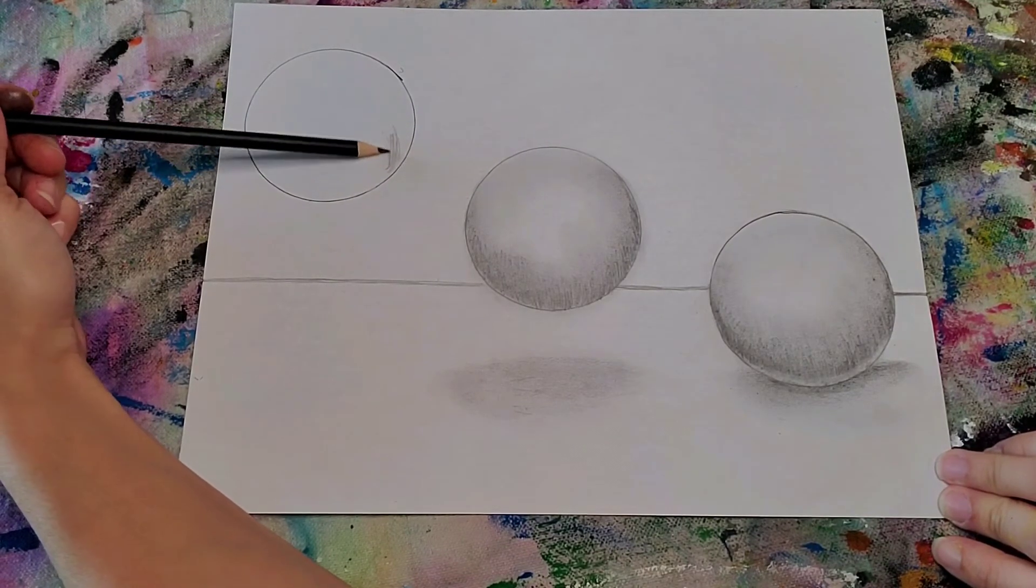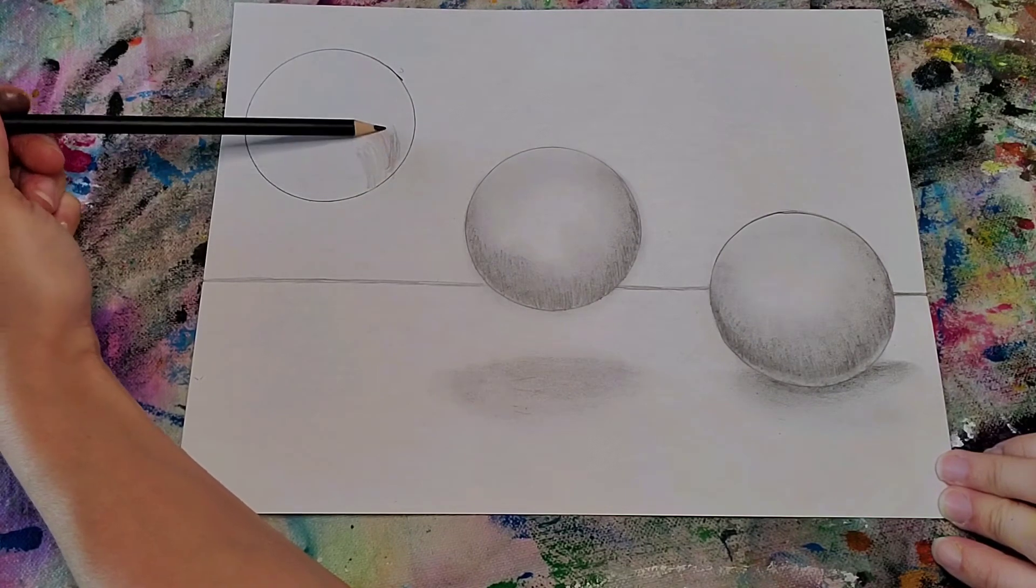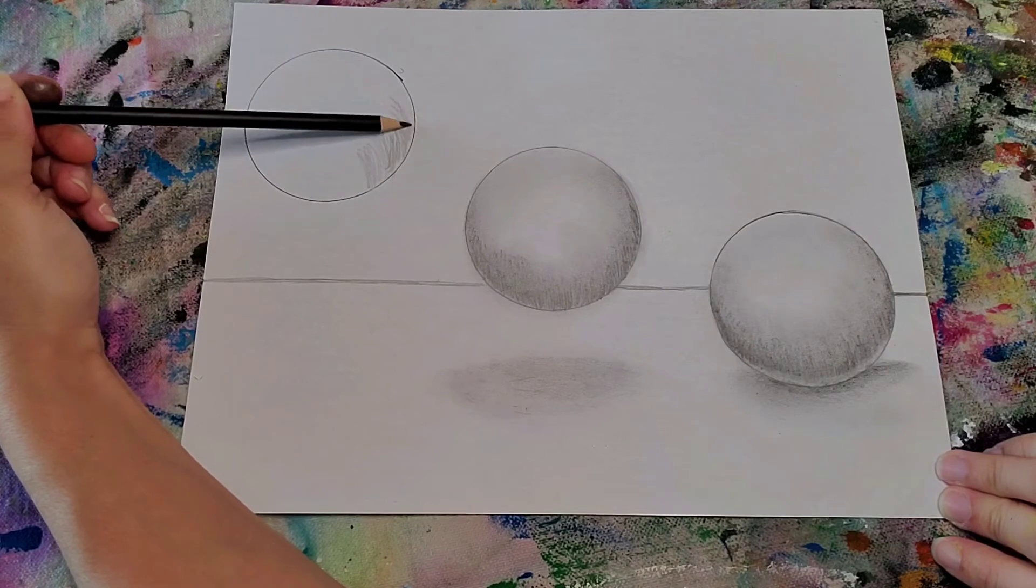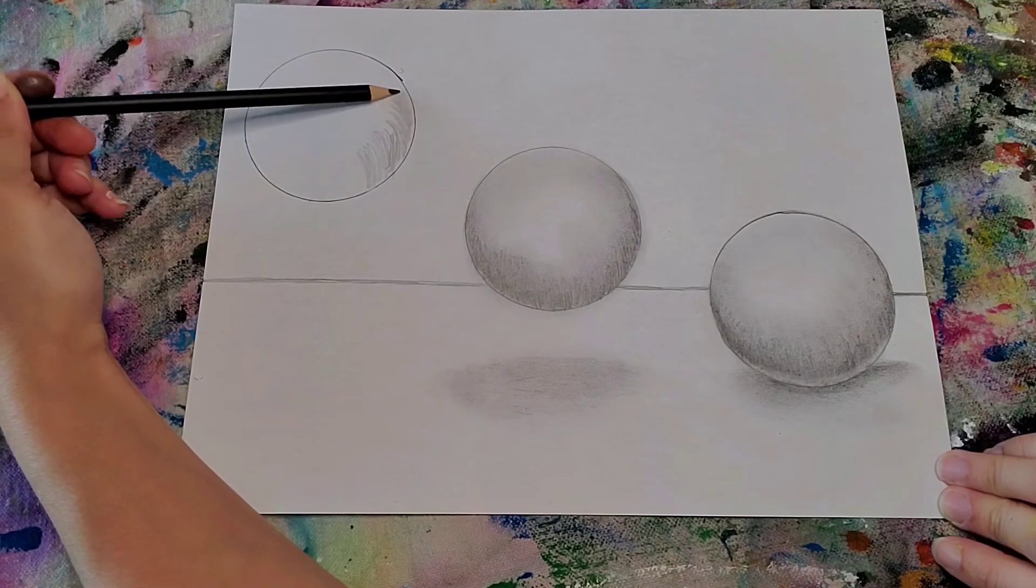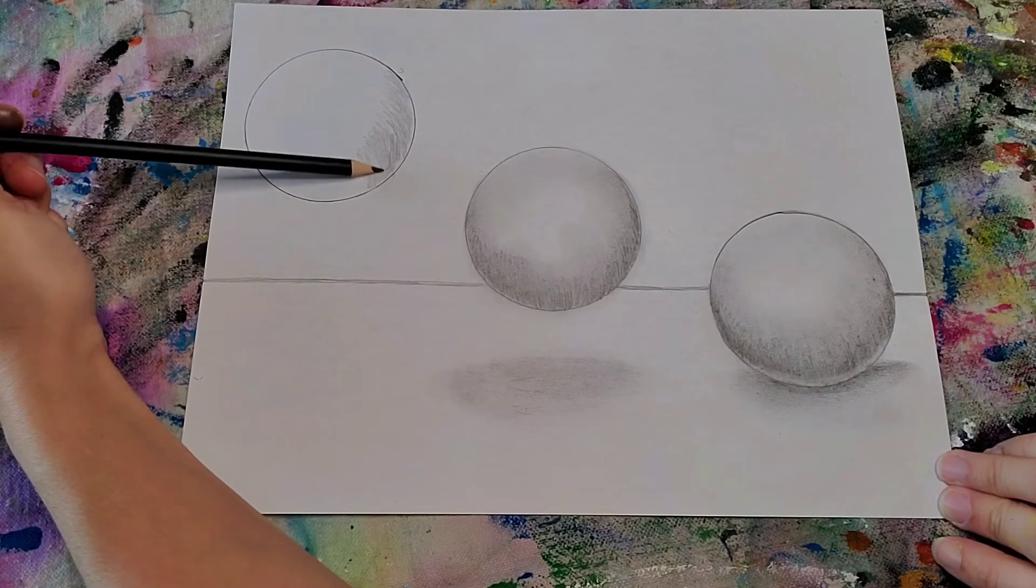Same thing. I'm turning pencil on the side, I'm curving in. This is what makes it look more round.